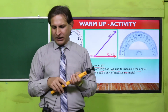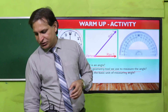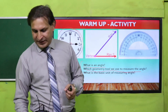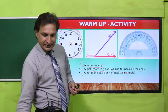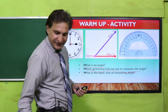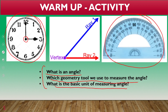Toh students, hamare paas jo geometrical tool use karte hain for measurement of angles — angles ki measurement ke liye hum log geometrical tool D-shape wala, jisko hum protractor kehte hain, use karte hain. So, what is the basic unit for measuring angle? Aur uska jo basic unit hai woh degree hai.